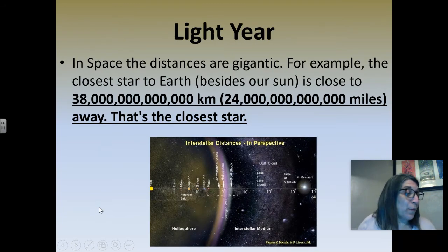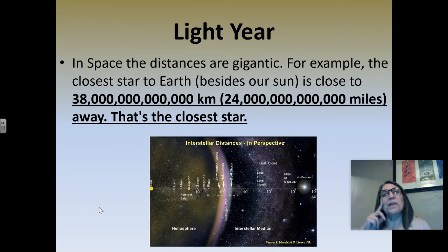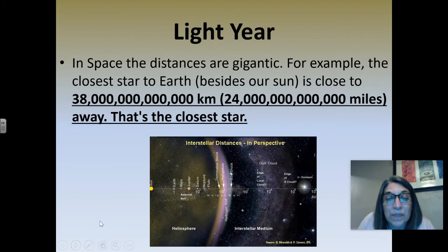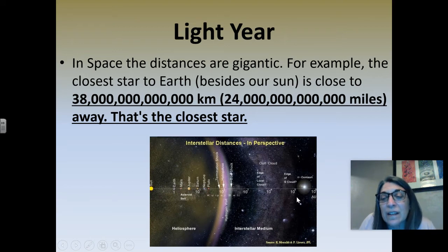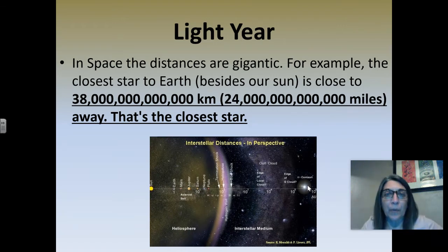So then we move on to light years. In space, since the distances are huge — the closest star besides our sun, and you guys know our sun is a star, right? — the next closest star is like 24 trillion miles away, or about 38 trillion kilometers. That's just to the closest star. The zeros just start getting so big, and we've only gone to one star other than the sun. So scientists said, okay, we can't go trillions upon trillions — we have to come up with another way to measure distance.